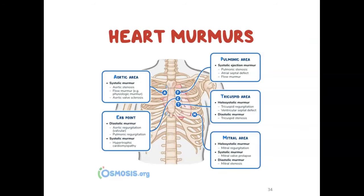Murmurs are heard in the areas corresponding to 'All People Enjoy Time Magazine.' Different causes include: an aortic murmur could be from aortic stenosis; pulmonic could be due to atrial septal defects or pulmonic stenosis; tricuspid could be holosystolic or systolic or diastolic; Erb's point — whether systolic or diastolic; and then the mitral area.